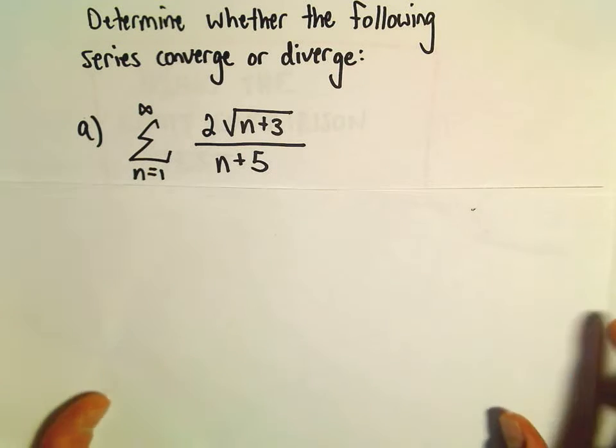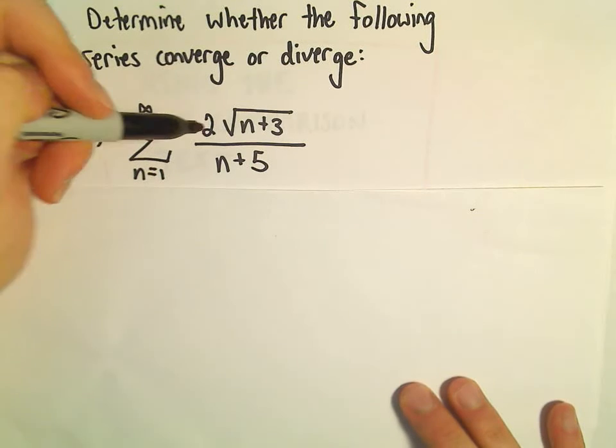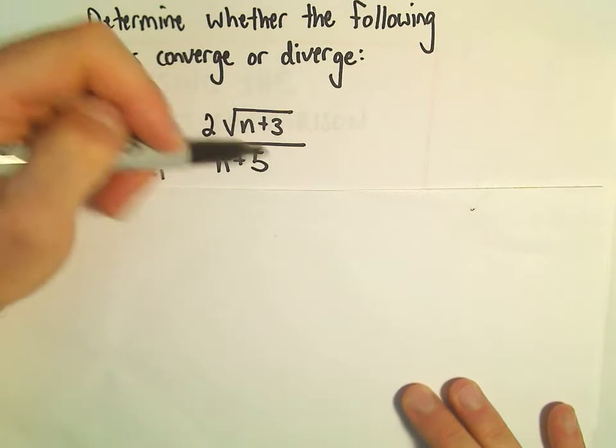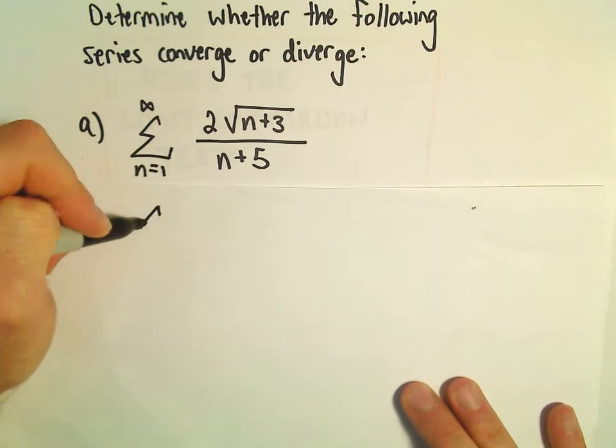So in the first one here, we've got the series from n equals 1 to infinity, 2 times the square root of n plus 3 over n plus 5. I'm going to do the same trick of keeping dominant terms.